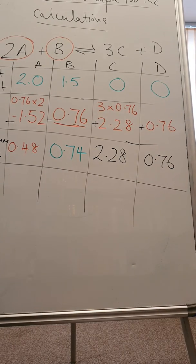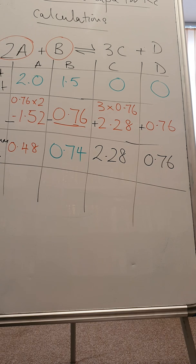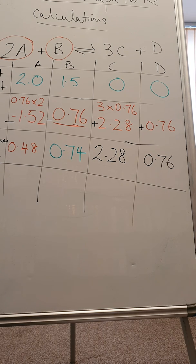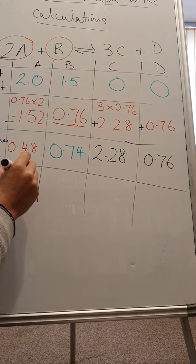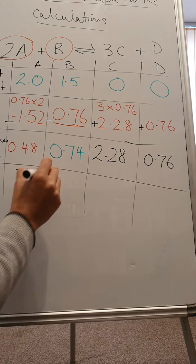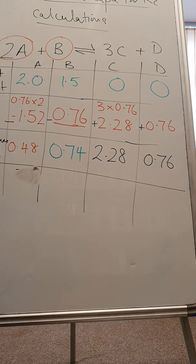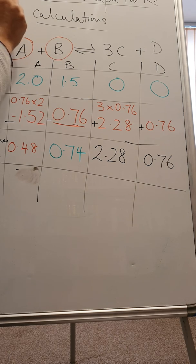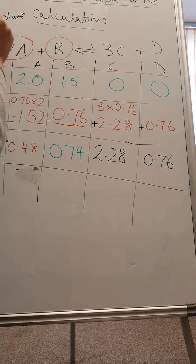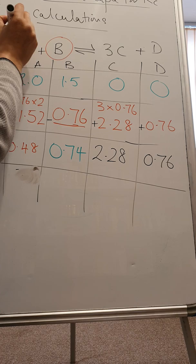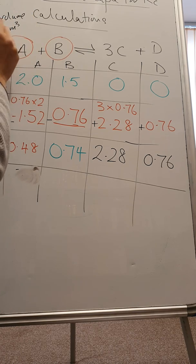Let's now say that the total volume of this solution, or the total volume of the mixture, is 1000 cubic centimeters. So the total volume equals 1000 cubic centimeters, which is 1 dm cubed.